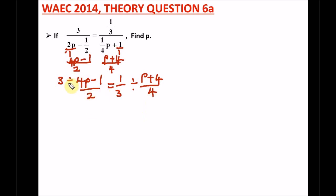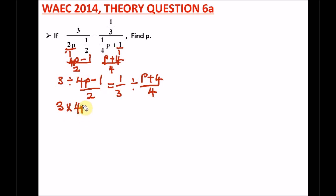So what we're left with is three divided by 4P minus one, over two, equal to one over three divided by P plus four over four. This is a division sign so we change it to multiplication and invert the second fraction. So we have three times four P minus one over two.